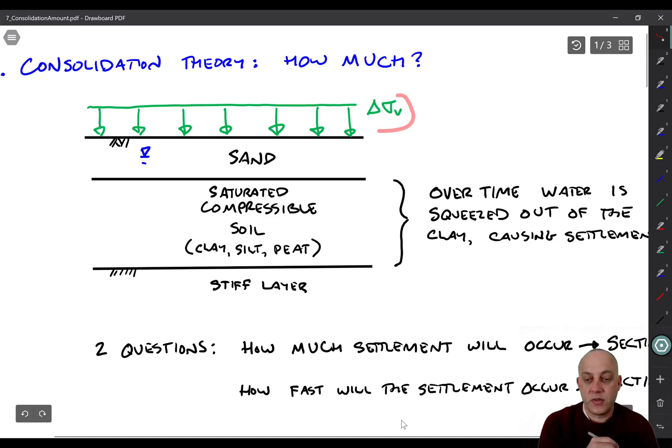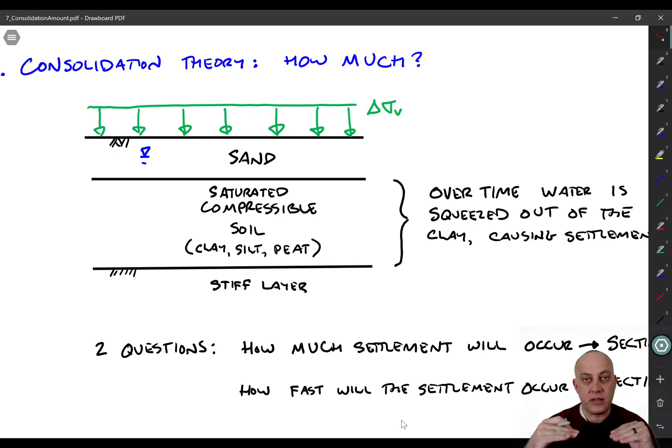Then we add a load to the surface, delta sigma v. So that could be from a building. Say we want to construct a tall building or a house or something, we put it on that sand. You know, it's slowly going to settle. Water's going to get squeezed out of the soft, compressible soil.